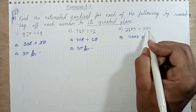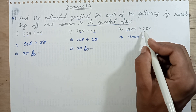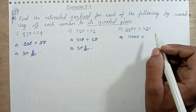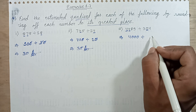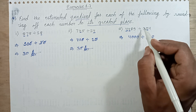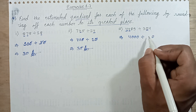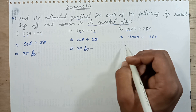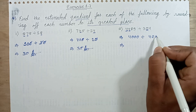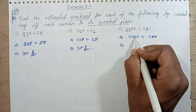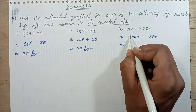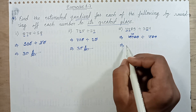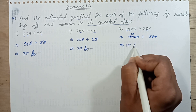Now rounding 394. The tens place digit is 9, which is greater than 5. So 9 is replaced with 0 and the hundreds place digit increases by 1: 3 plus 1 is 4. Dividing the rounded numbers: 4,000 divided by 400 gives 10. So 10 is my answer.